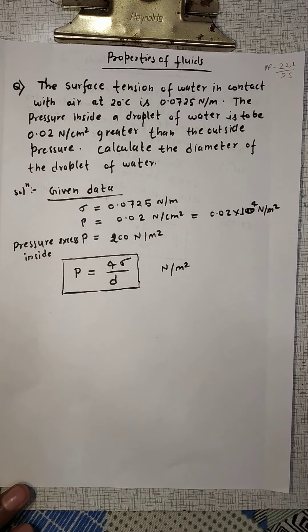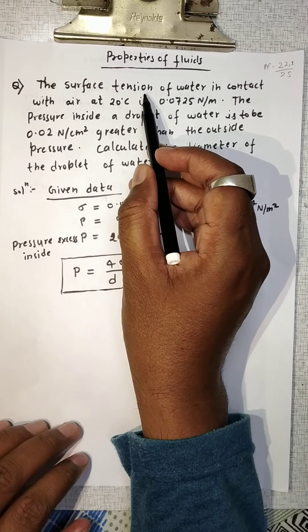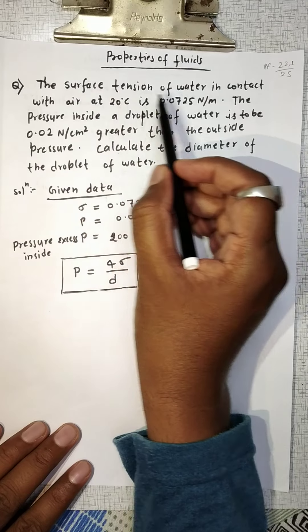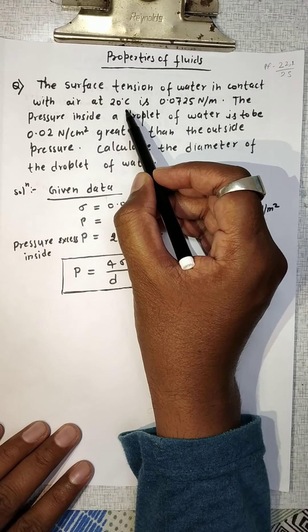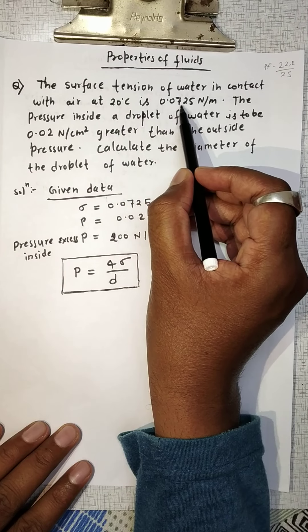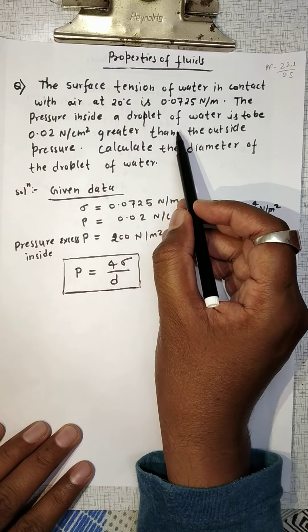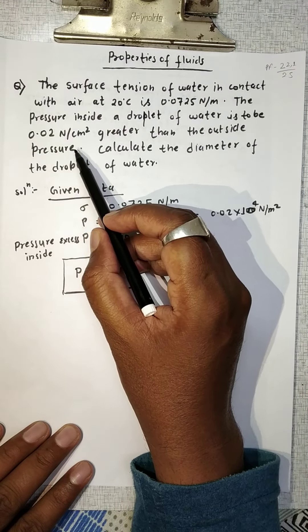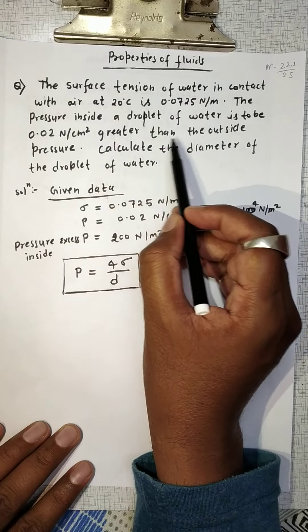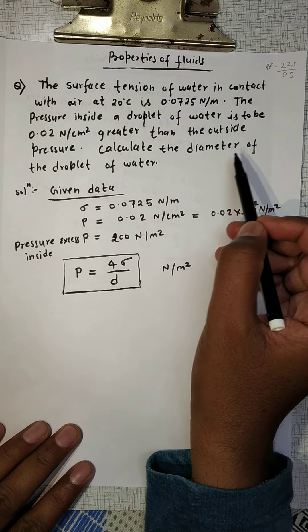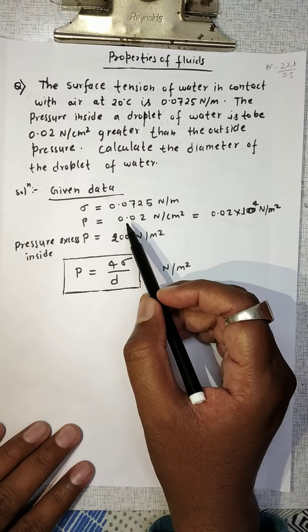Hello friends, welcome to my channel. I am your friend and I will start a question related to properties of fluids and surface tension. The question is: the surface tension of water in contact with air at 20 degrees centigrade is 0.0725 Newton per meter. The pressure inside a droplet of water is to be 0.02 Newton per centimeter square greater than the outside pressure. Calculate the diameter of the droplet of water.